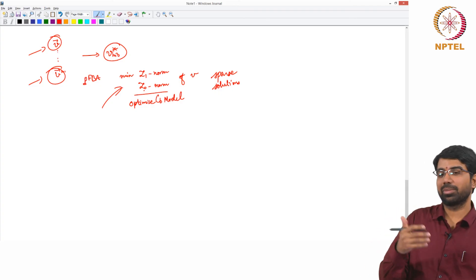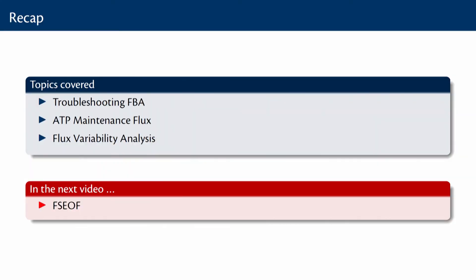So in this video, I hope you got a good overview of how one goes about troubleshooting an FBA simulation. And we also studied the concept of ATP maintenance flux and the very interesting concept of flux variability analysis. In the next video, we will go back to how we perturb these metabolic networks and look at the other kind of perturbation. We have already looked at deletions previously. Now let us look at overexpression which involves this interesting technique known as FSEOF which stands for flux scanning based on enforced objective flux.